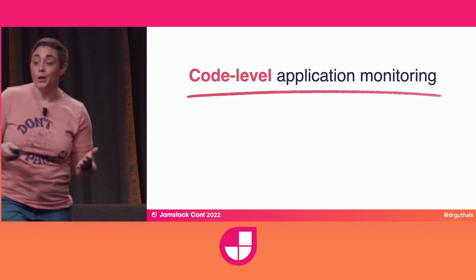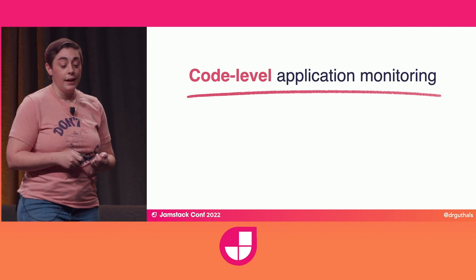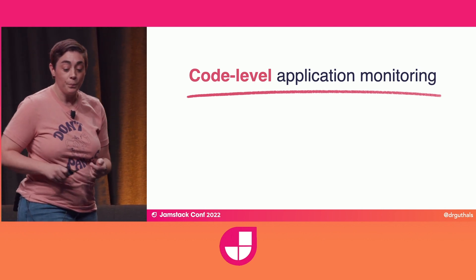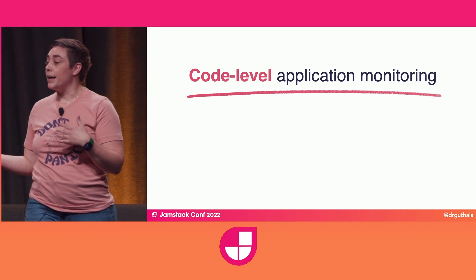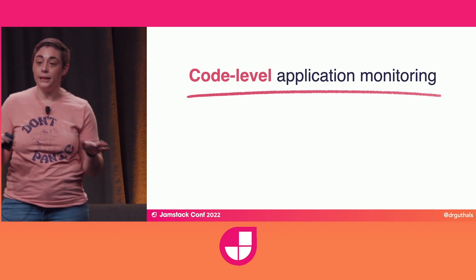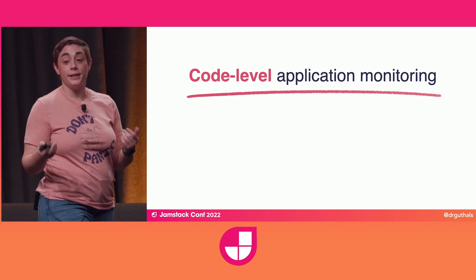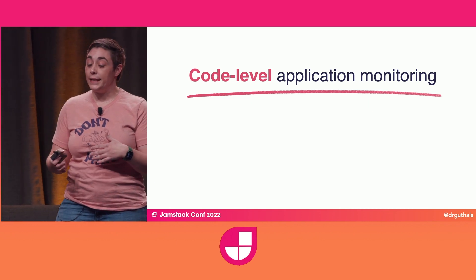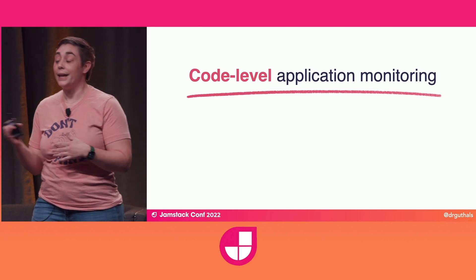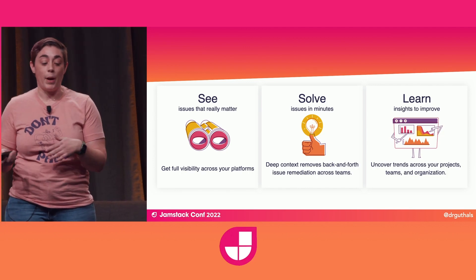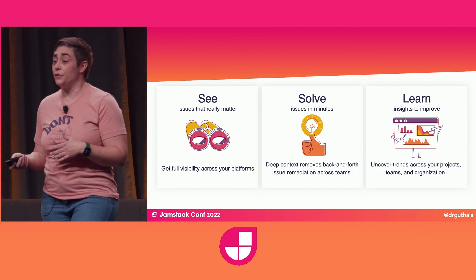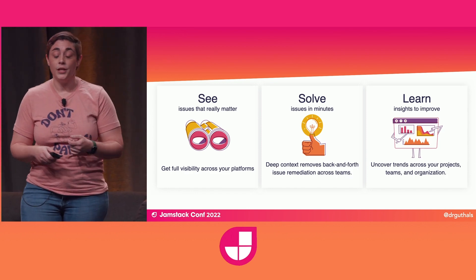So the solution that Sentry tries to provide is code-level application monitoring. Code is constantly evolving and getting more complex. The ability to monitor code holistically across front-end, back-end, APIs, and microservices has become completely a mess. Sentry provides that code-level visibility that organizations need to help developers solve and learn from these issues. With Sentry, you can drill down into the code to see directly from the error the issues that matter.